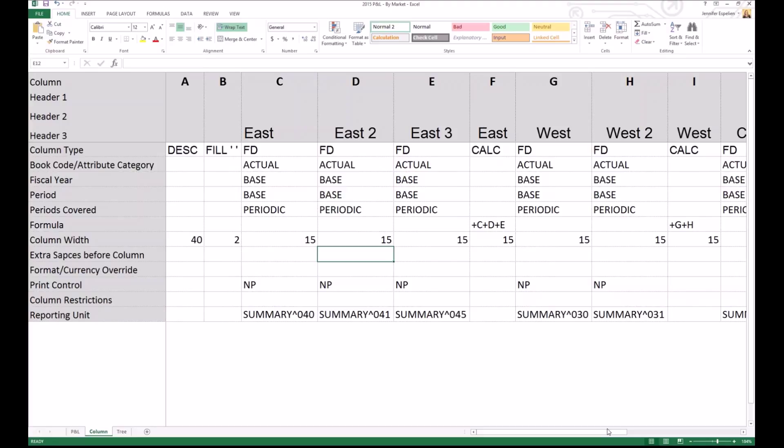They're all non-printing. That print control says NP, so they're all non-printing columns. We bring this data in to MR, but we don't have to show it on the report. The reason for that in this case is they've got three divisions that make up their east division. All the magic happens really in this one line reporting unit. So we've restricted each column to a particular reporting unit. This first column, column C, says east. It's a summary 040. They're reporting units, their east divisions made up of three units: 040, 041, 045.